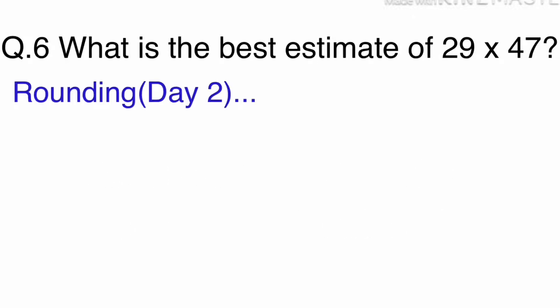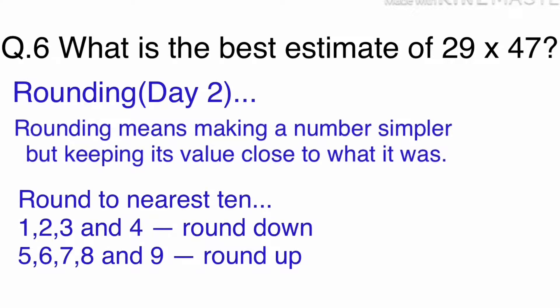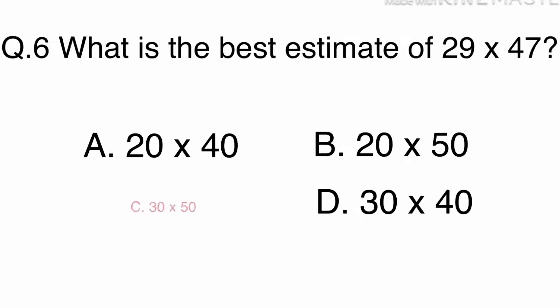We have already learnt rounding in day 2. Rounding means making a number simpler but keeping its value close to what it was. So in this question, 29 rounds up to 30 and 47 rounds up to 50. The answer is C. 30 times 50.